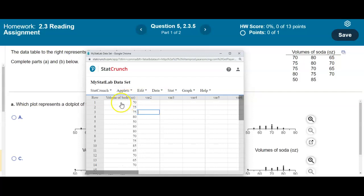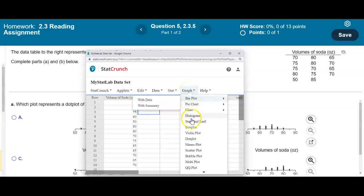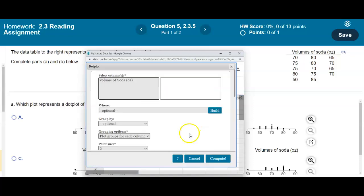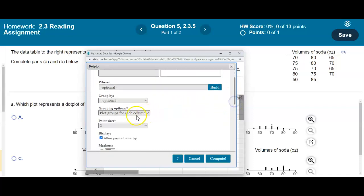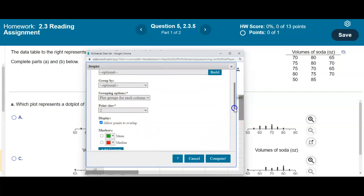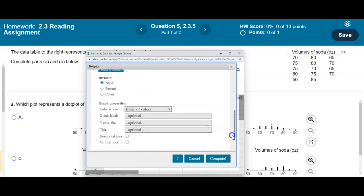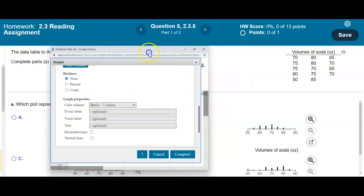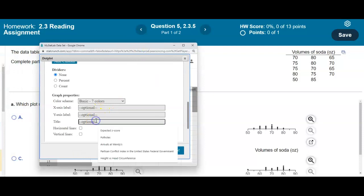And now what we're going to do is you want to create a dot plot. So we're going to select graph and then we're going to scroll all the way down to where it says dot plot. Okay, so we're going to select the volume of soda and ounces. And so we have group by, we have point size, says allow points to overlap. And then here we're going to call this the title and the title is volume of soda and ounces.